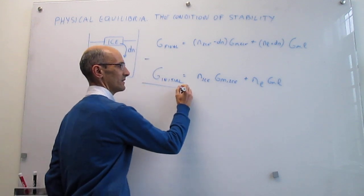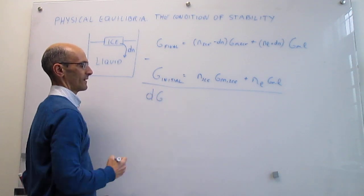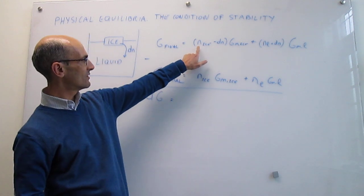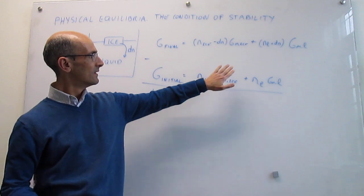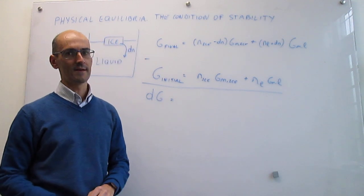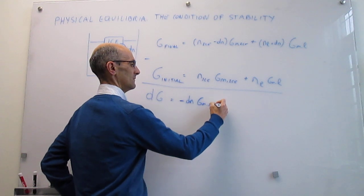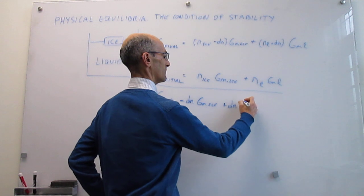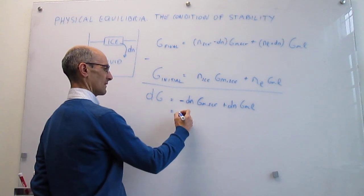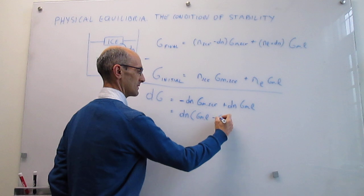In order to calculate the change in Gibbs energy, we just have to subtract final minus initial, and this is going to be simply a differential of the phase transition. When you distribute this product, you notice that you're going to have a term — n_ice times molar Gibbs energy of ice — that is going to cancel exactly with the same term from before. So the only terms that survive are those that have the differential of n: minus the differential of n multiplied by the molar Gibbs energy of the ice, plus differential of n multiplied by the molar Gibbs energy of the liquid. Taking the common factor of differential of n, that gives us the molar Gibbs energy of the liquid minus the molar Gibbs energy of the ice.